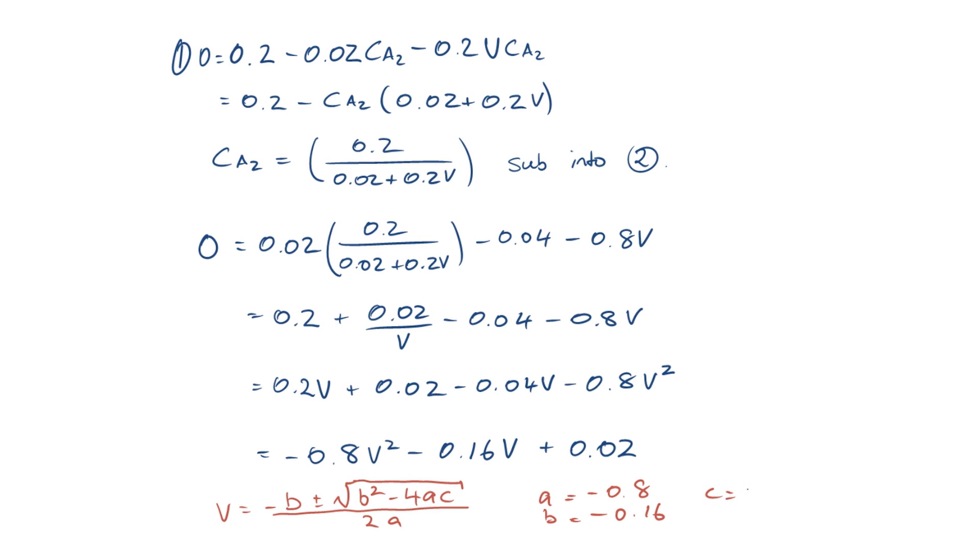So on this final slide, I'm just going to work through the solution to that quadratic equation. Note the 0.16 inside the square root there doesn't have to be a negative, because when we're squared, it obviously comes out positive anyway.